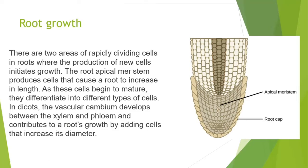Root growth occurs at two areas of rapidly dividing cells where the production of new cells initiates growth. The root apical meristem produces cells that cause the root to increase in length. As these cells begin to mature, they differentiate into different types of cells. In the cortex, the vascular cambium develops between the xylem and phloem and contributes to the root's growth by adding cells that increase its diameter.